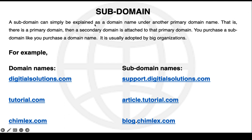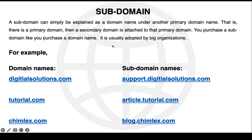A subdomain is a domain name under another primary domain name — there is a primary domain, and a secondary domain is attached to it. For a subdomain name, you have to purchase it, just like you buy a regular domain name. You purchase it from whatever hosting company you are using, and you attach it to your domain name.